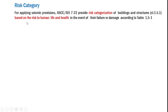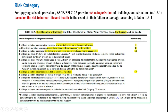Table 1.5-1 covers risk categories of buildings and other structures. This risk category applies to a set of loads that includes flood, wind, tornado, snow, earthquake, and ice loads. There are four categories starting from category one through four, each associated with an increased level of risk to human life.